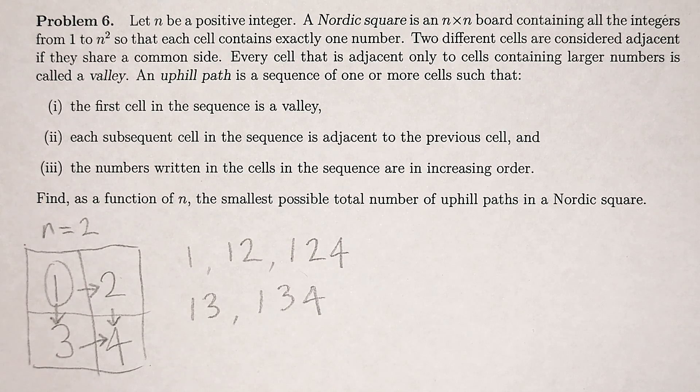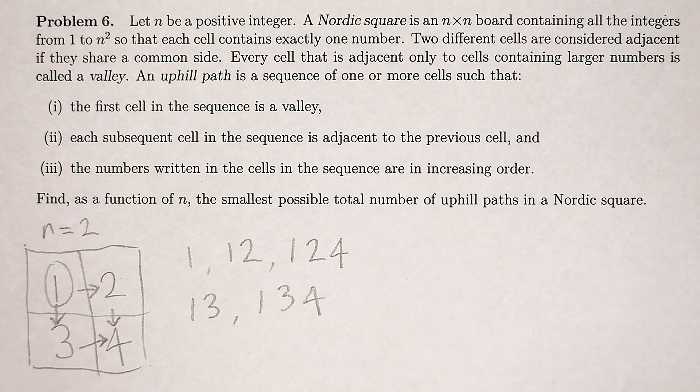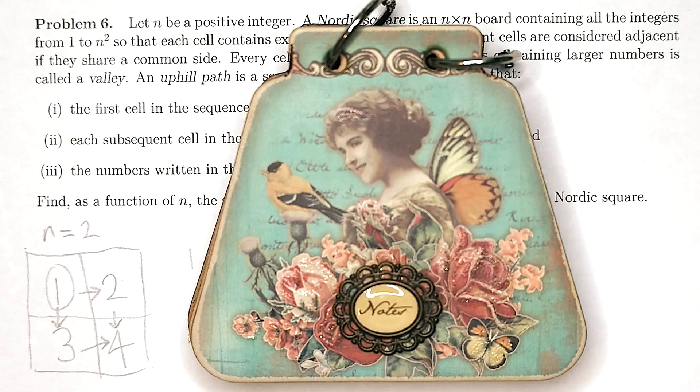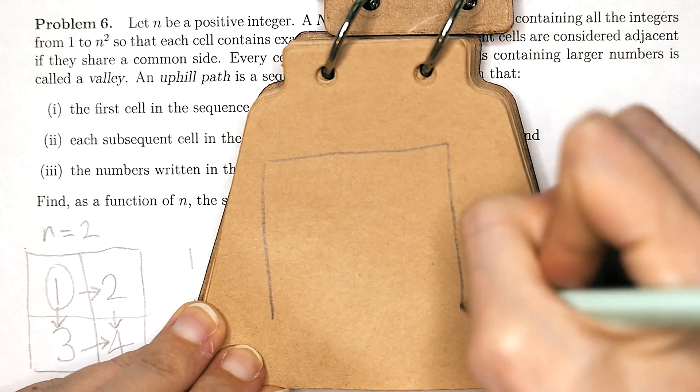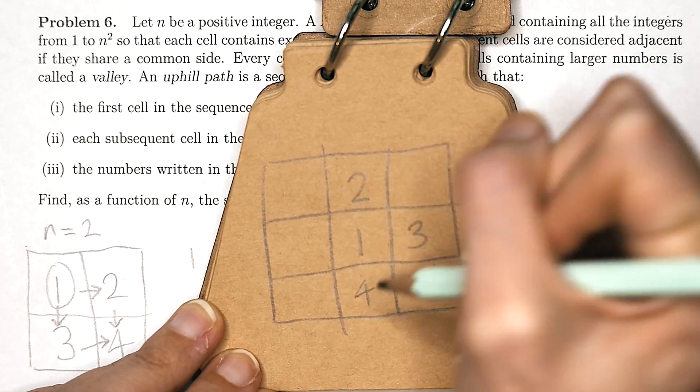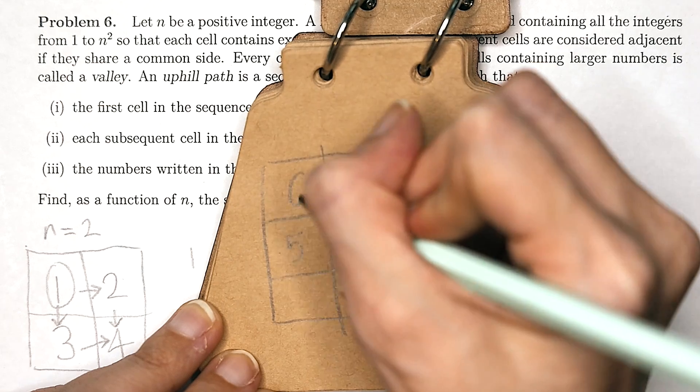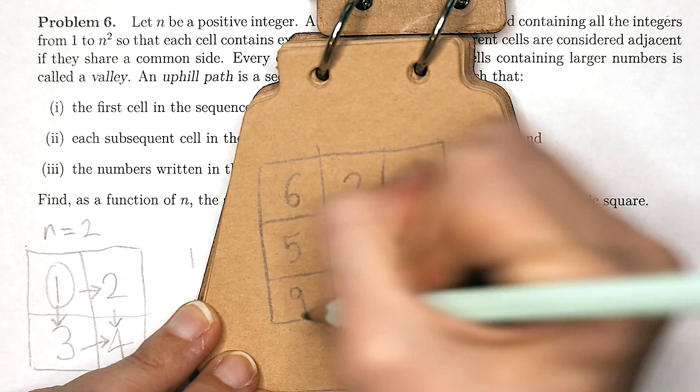I don't think it's possible for a human to look at this and know the solution instantly. You really do have to play around and try a bunch of random things to see if any patterns pop out. Here's an example of a 3 by 3 Nordic square which looks like it might have the minimum paths for this size.